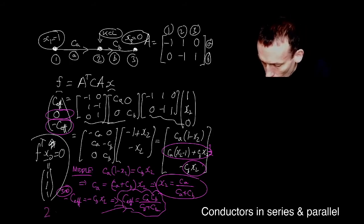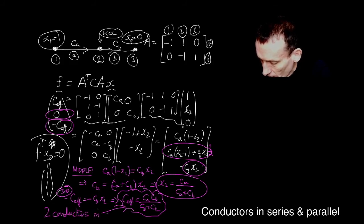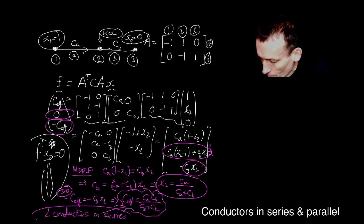Oh my goodness. These are two conductors. We call this in series because basically it's one conductor followed by another one. And I've just shown you that the effective conductance of a conductor CA in series with a conductor CB is actually the product of those conductances divided by the sum of the conductances.